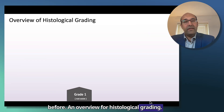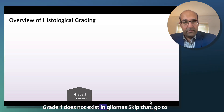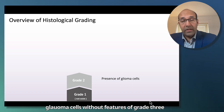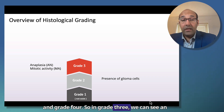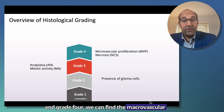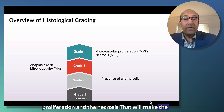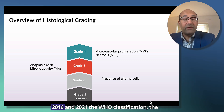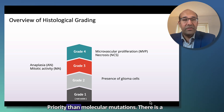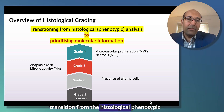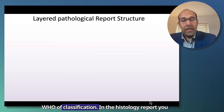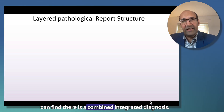An overview for histological grading. Grade 1 does not exist in gliomas — skip that, go to grade 2. In grade 2, we see a presence of glioma cells without the features seen in grade 3 and grade 4. In grade 3, we can see anaplasia and high mitotic activity. In grade 4, we can find microvascular proliferation and necrosis. But we should know that in the 2016 and 2021 WHO classifications, histology diagnosis and phenotype become less priority than molecular mutations. In the histopathology report, you can find there is a combined integrated diagnosis.